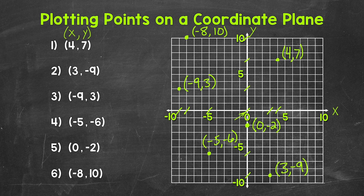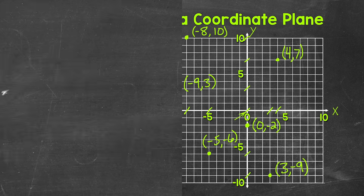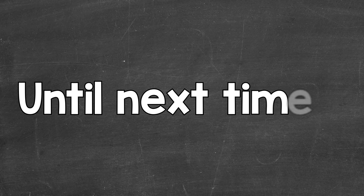Now as I went through these examples, I made marks on the x-axis and y-axis as far as where we needed to look in order to plot these points correctly. These marks are not necessary when plotting points — I just put them on the x and y-axis to show where we needed to look. So there you have it — there's how to plot points on a coordinate plane. I hope that helped. Thanks so much for watching. Until next time, peace.